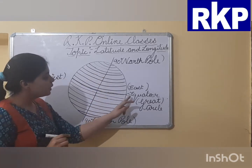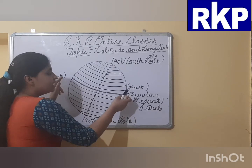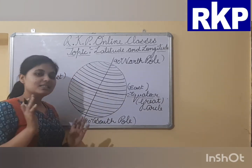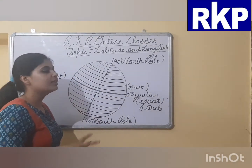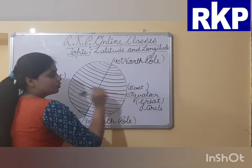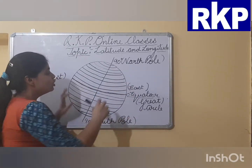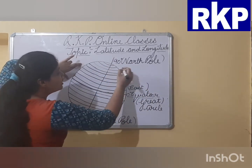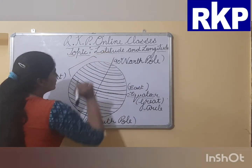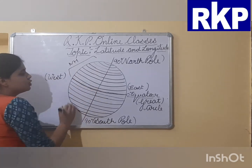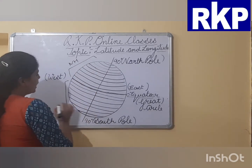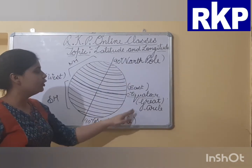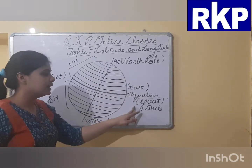Here you will see one such latitude line — I have darkened this one. Another such latitude line is the equator — zero degree equator. Equator is any latitude line that divides the earth into two equal halves: the northern hemisphere and the southern hemisphere. The part of the earth toward the north of the equator is the northern hemisphere, and the part toward the south of the equator is the southern hemisphere.